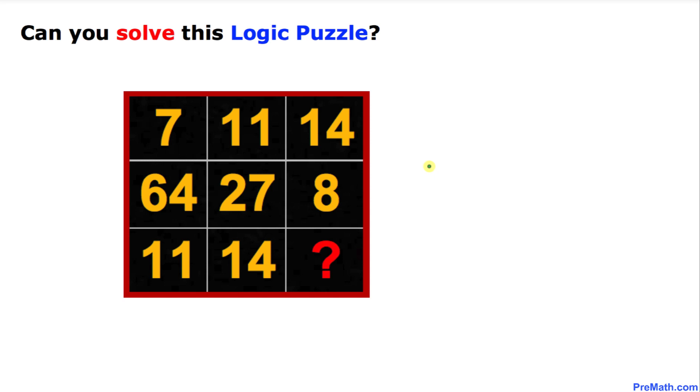Welcome to PreMath. In this video tutorial we are going to solve this logic puzzle. Here's our puzzle. In the first row we got numbers 7, 11, and 14. In the second row we got 64, 27...